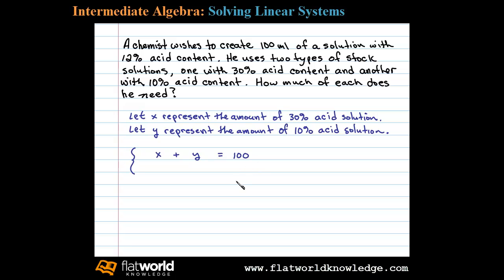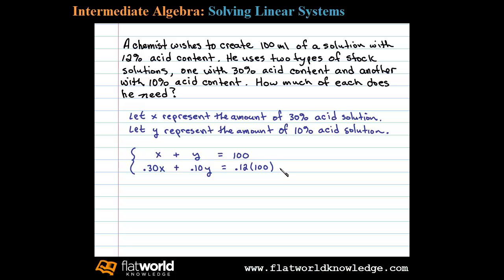Our second equation comes from the acid content at the correct percentage. 30% of the amount X — that is, 0.30X — is the actual acid content in the first solution, plus 10% of the amount Y, so 0.10Y, is the acid in the second solution. The end result is to have 12% acid content, or 0.12 times 100 milliliters equals 12. This gives us our setup: total amount and total acid content.